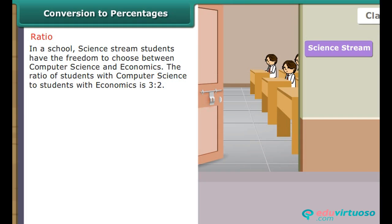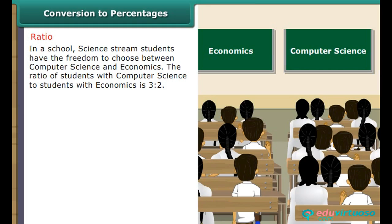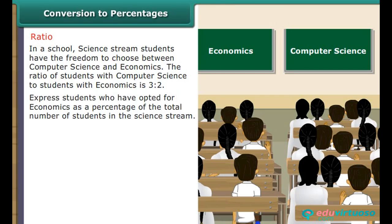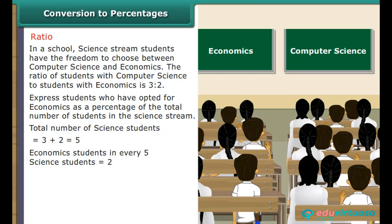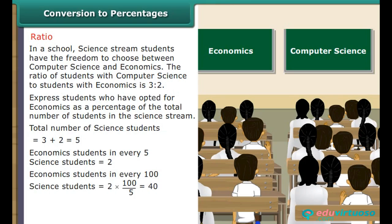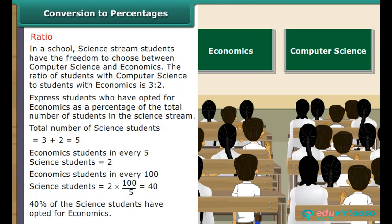Ratios: In a school, science stream students choose between computer science and economics. The ratio of computer science to economics students is 3:2. Total science students = 3 + 2 = 5. Economics students in every 100 science students = 2/5 × 100 = 40. Therefore, 40% of the science students opted for economics.